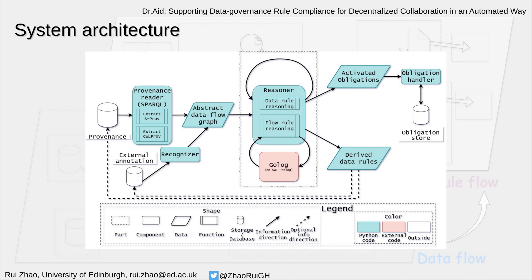The reasoning result contains two parts. One is the activated obligations, which are stored to the obligation store. The other is the derived data rules, which are stored back either to the provenance or to the external annotation. The user can further examine the obligation store to check what obligations he or she still has to deal with.